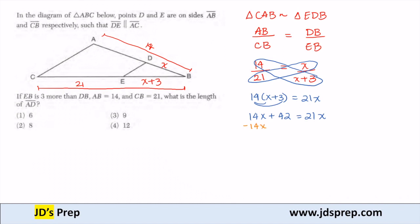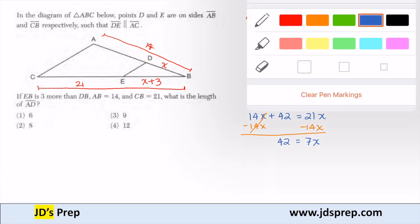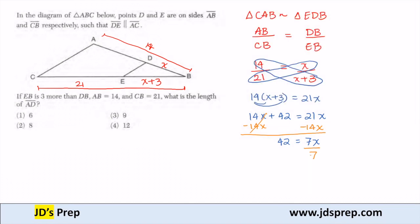When we subtract that 14X over to the other side, 42 equals 7X, and then divide by 7 to find the value of X. So X, which is the measure of DB, equals 6.